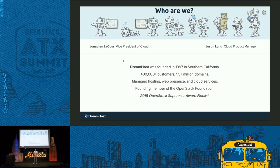Let me tell you a little bit about DreamHost. We were founded in 1997 in Southern California as a web hosting business. We have over 400,000 customers, over 1.5 million domains hosted. We provide managed hosting, web presence, and cloud services. We are a founding member of the OpenStack Foundation, we're a gold member now, and we were a finalist for the 2016 OpenStack Super User Award, which we're very proud of.